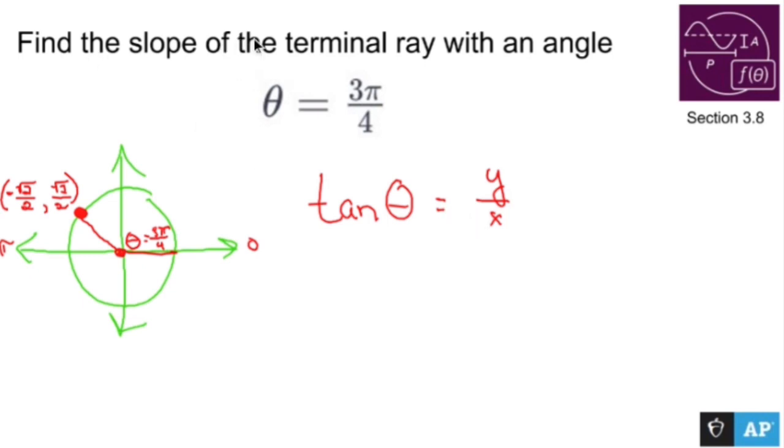So in order to find the slope of the terminal ray, I'm going to find the tangent of that angle right there. So the tangent is found by doing y over x. So tangent of 3 pi over 4 is going to equal my y value, which is root 2 over 2, over my x value, which is negative root 2 over 2.